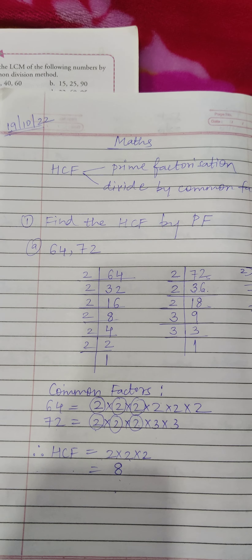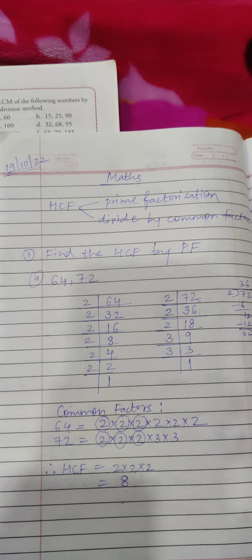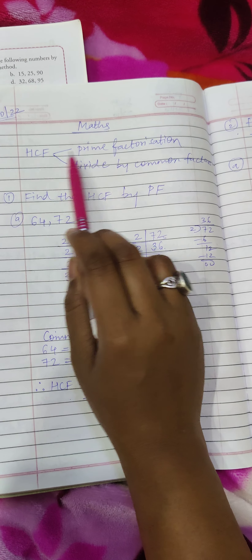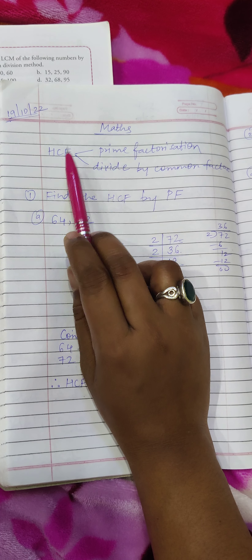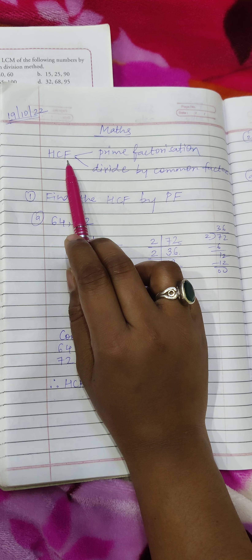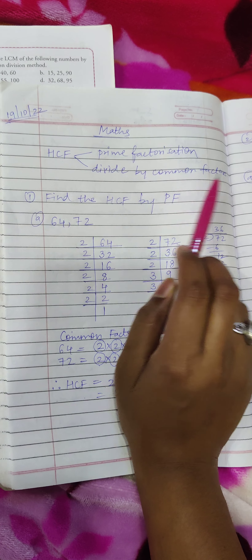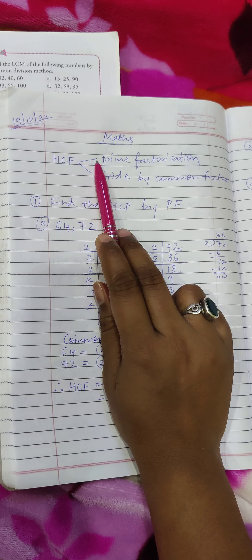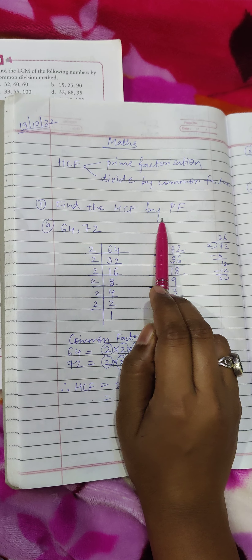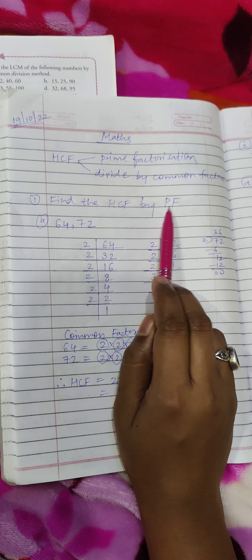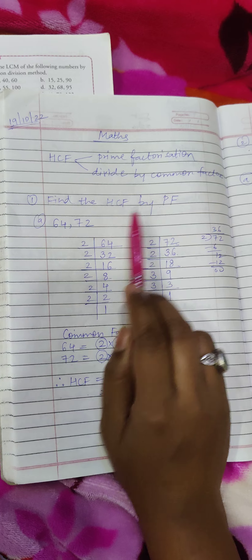Hello students, here we are about HCF and LCM. There are two methods to find the HCF of given numbers: that is prime factorization and the next one is dividing by common factor. Let's start with the first one. If the question asks to find the HCF by prime factorization — written in short as PF — so how are we going to do this here?